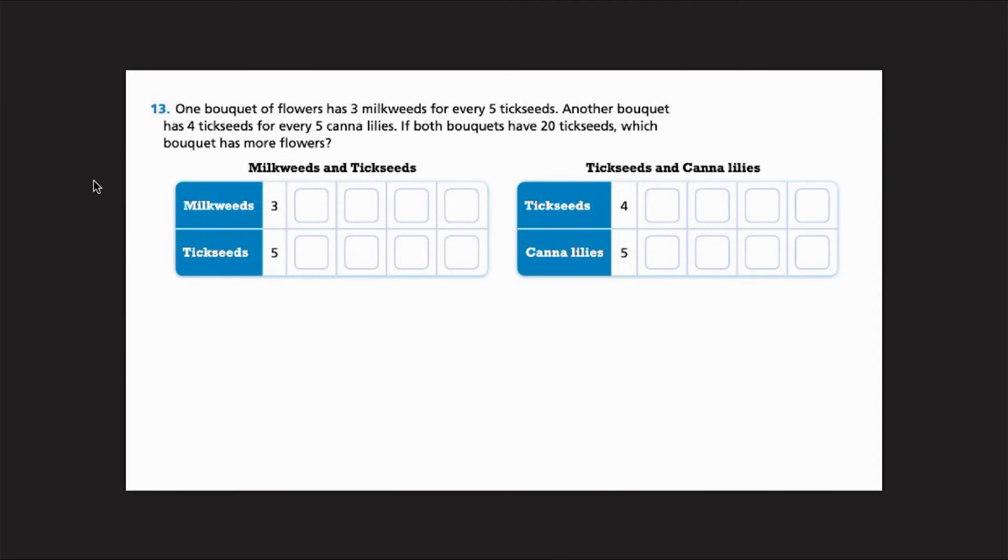And this is the last one we'll look at together. It says, one bouquet of flowers has three milkweeds for every five tick seeds. Another bouquet has four tick seeds for every five canna lilies. If both bouquets have 20 tick seeds, which bouquet has more flowers? So we've already started by putting our original ratio in and what two things that we're comparing. So what we're going to do is go ahead and fill in our ratio table, just like we have in the previous problems.